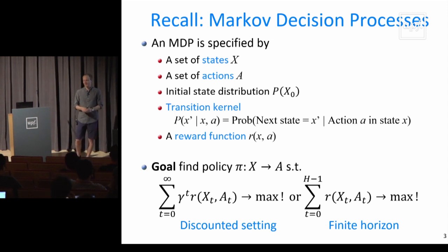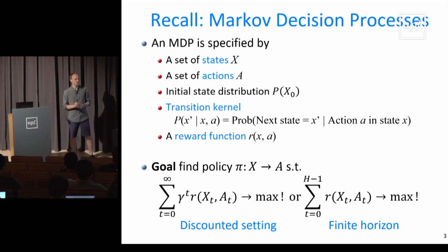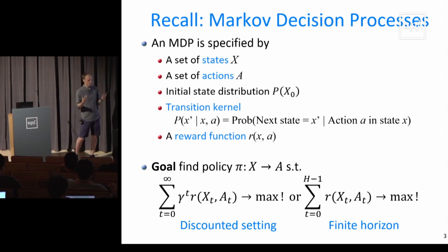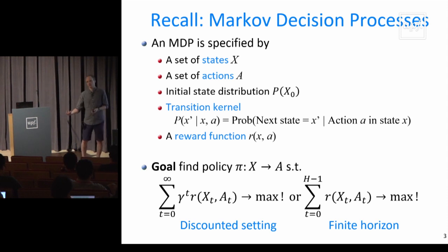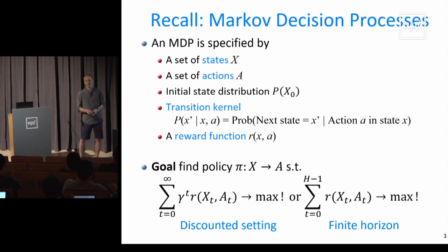Just briefly on notation — we have MDPs, and mostly we'll focus on MDPs for this talk. Following control notation, states are X; following RL notation, actions are a. We have an initial state distribution and an environment modeled as a probability distribution over next states X-prime given current state and action. Our goal is to maximize reward, either discounted in the infinite-horizon setting or over a finite horizon H.